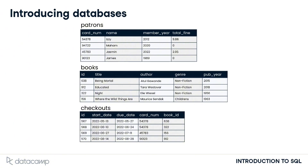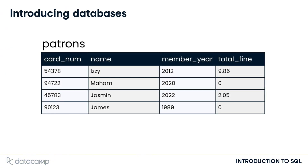This information is housed in objects called tables, with data organized into rows and columns. This database contains a patrons table, a books table, and a checkouts table. A closer look at the patrons table shows that it stores various data about our library's patrons, like library card number, name, the year the patron became a library member, and the total overdue fines the patron owes our library.